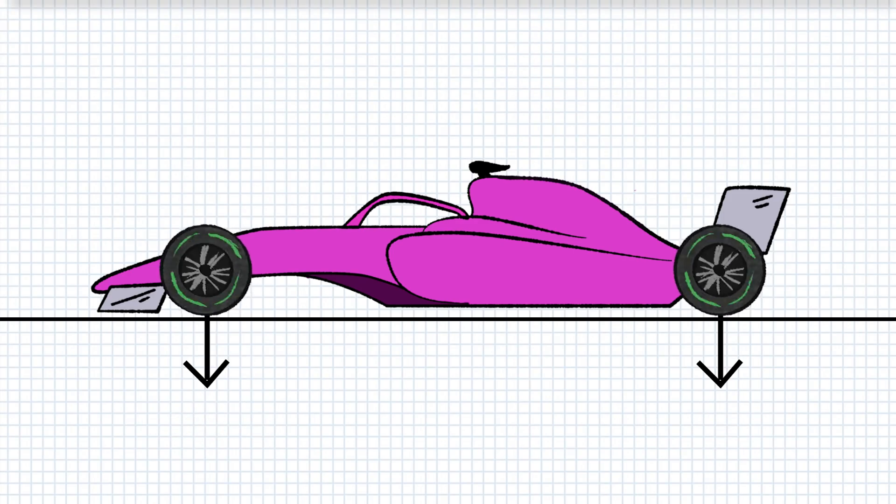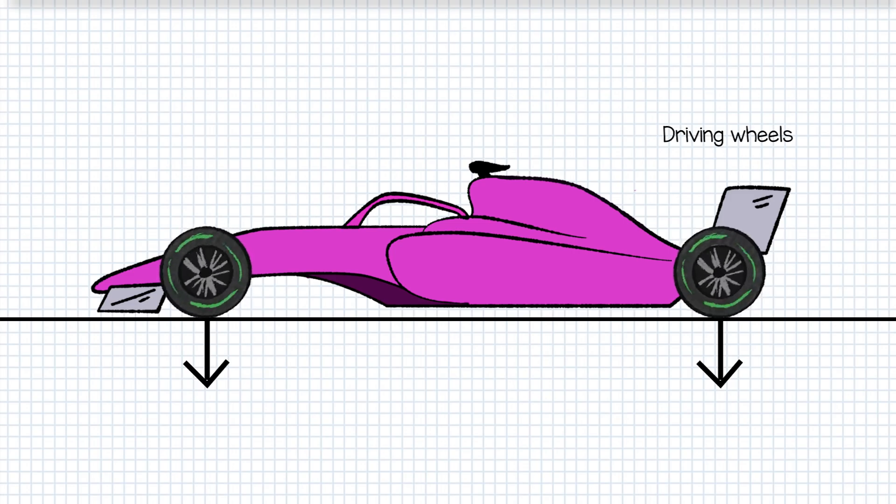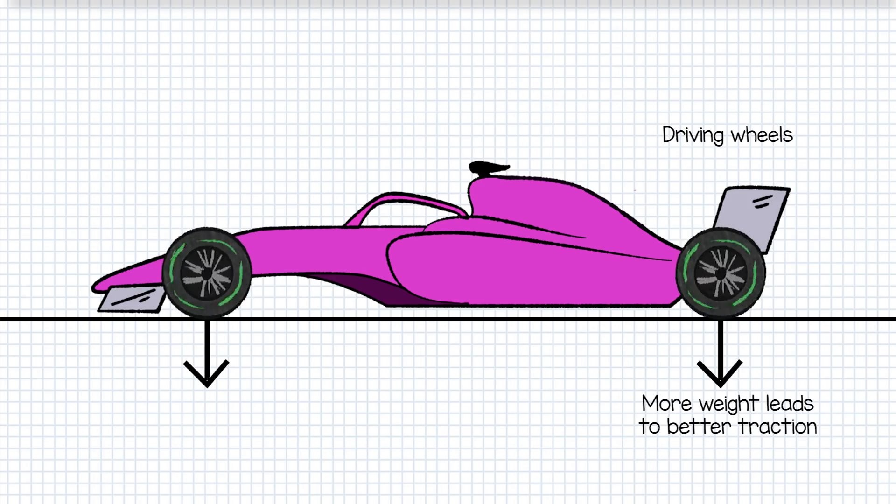Secondly we have to consider acceleration. All the acceleration comes from the rear wheels as these are the driving wheels. More weight over the rear axle to a point leads to better traction through and out of the corners, meaning better acceleration. Under balance the rear of the car and traction will suffer.